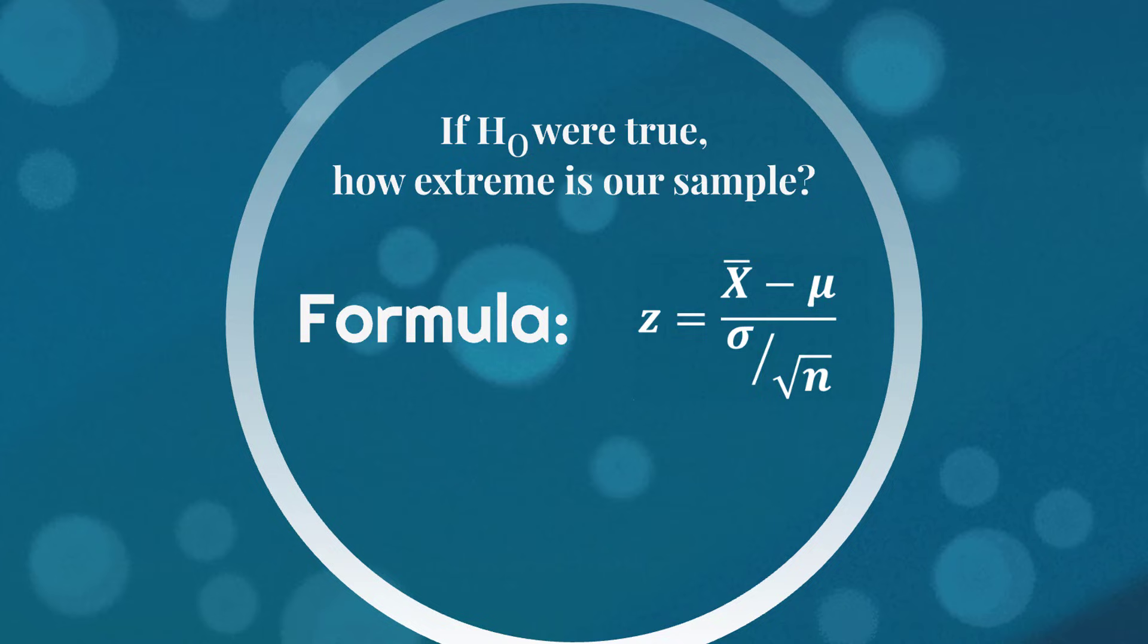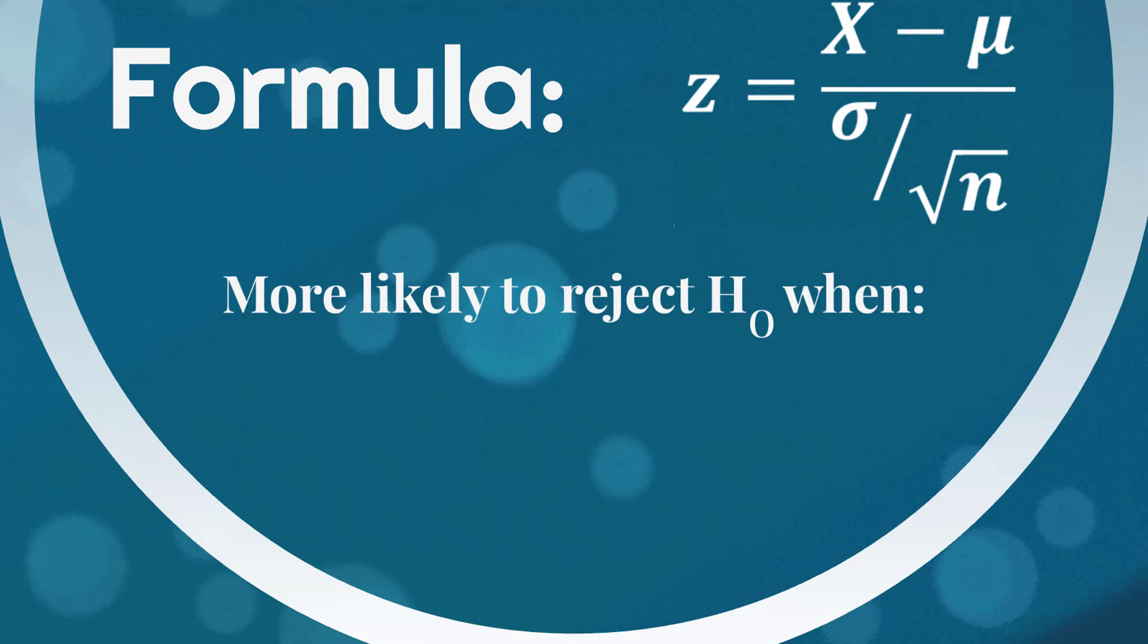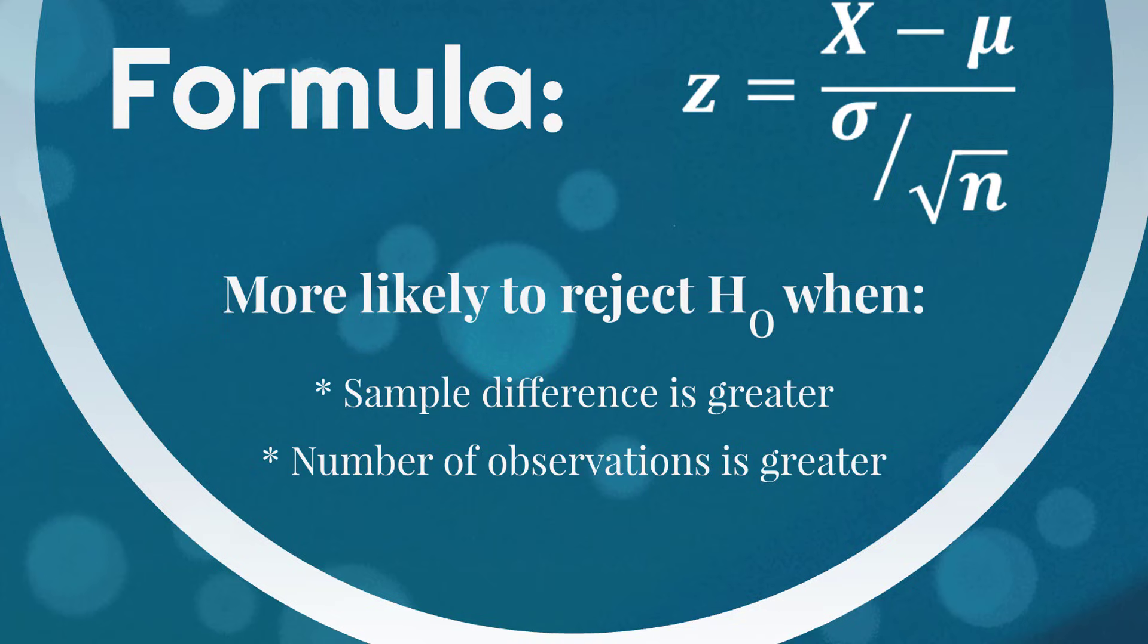And also you might notice on the denominator, there's an n down there. And we now understand how that works too, because as n increases, that value of z will also increase, meaning again that we're more likely to reject the null, as we saw in Louisa's example. Now the sigma in that formula represents the underlying standard deviation, but that's at least the formula explained. So just in this very theoretical example we've done, we know that we're more likely to reject H0 when the sample difference is greater, like in Justin's example, and when the number of observations is greater, like Louisa's example.